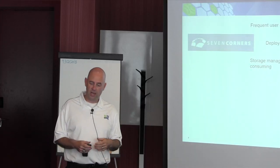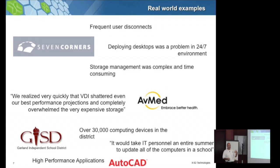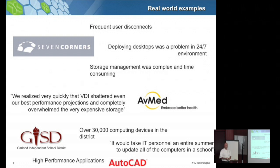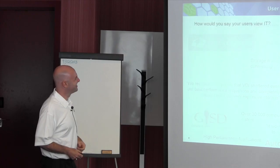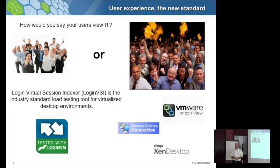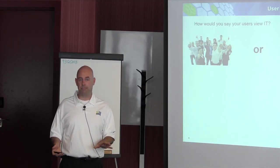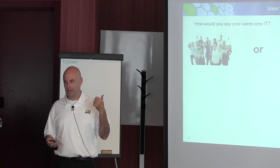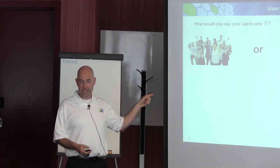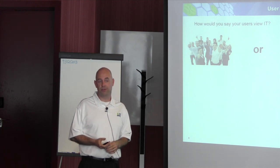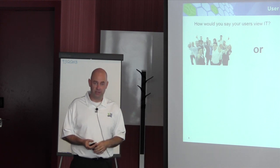Some real-world examples from our customers: Seven Corners is basically a 24x7 VDI shop — they would have disconnects during the day and have a very small window to do deploys. AvMed's planning went completely out the window because they were far more aggressive than they thought they'd be. And Garland Independent School District has over 30,000 computing devices across 22 campus locations — a massive environment that even offers AutoCAD to users. VDI goes down or slows down, and a relatively small organization can measure their downtime in thousands of dollars an hour, because literally everybody in the organization stops.